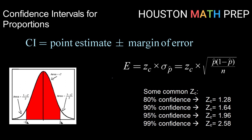Our confidence interval in general is calculated by taking our point estimate — in this case that's p-hat, which is the number of successes divided by the number in your sample, or x over n — and adding and subtracting our margin of error. For proportions, the margin of error uses z critical value times the standard deviation for the distribution of sample proportions. That sigma for p-hat is the square root of p-hat times (1 minus p-hat) divided by n, where p-hat is x over n.